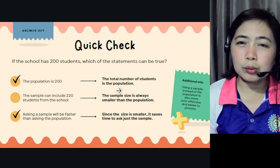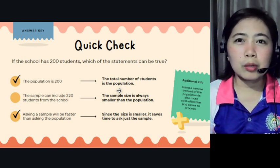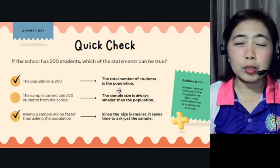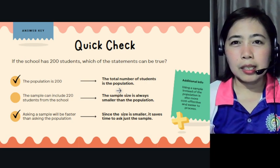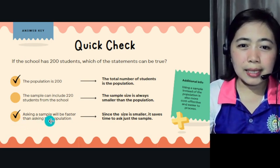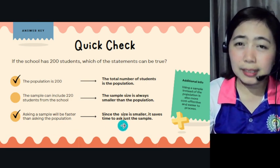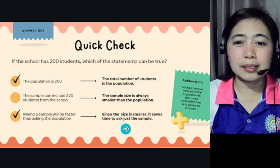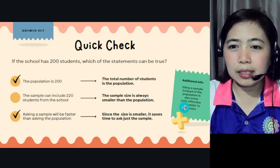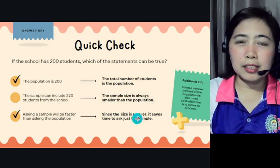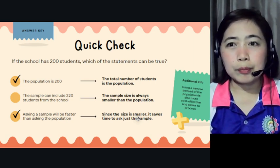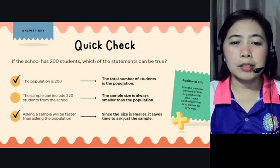Another true statement is: asking a sample will be faster than asking the population. Since the size is smaller, it saves time to ask just the sample. Using a sample instead of the population is also more cost-effective and easier to process. Your research will be easier to carry out, and this is also mentioned in your Chapter 3 — for how long you will conduct the study, within the second semester of school year 2023–2024.